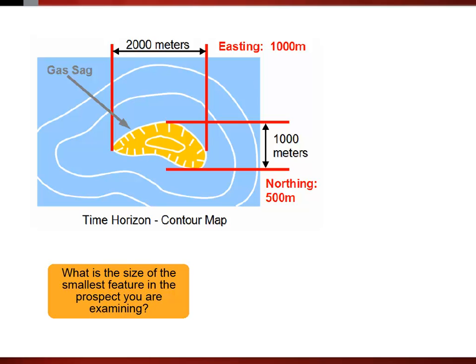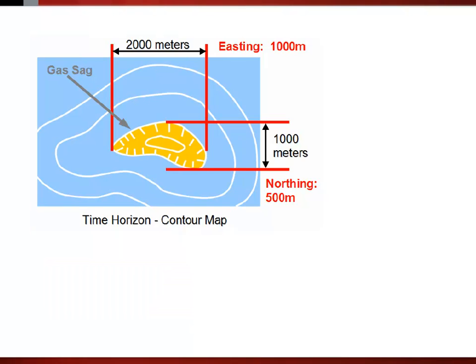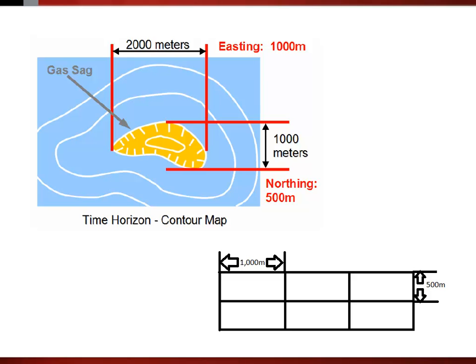Generally, the sampling should be less than half the dimensions of the smallest feature you're attempting to resolve. The graphic shown here displays a gas sag feature, which is 2,000 by 1,000 meters, so the grid spacing we'd input to resolve it is 1,000 by 500 meters.